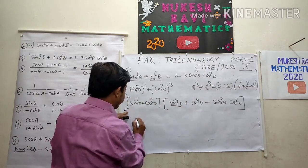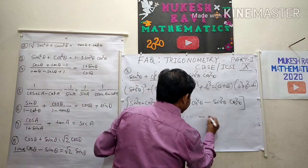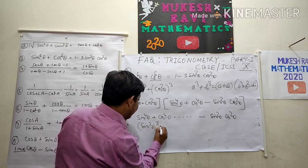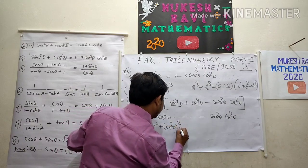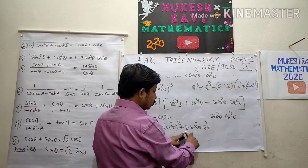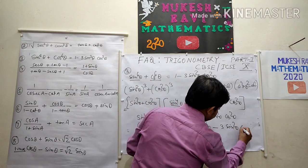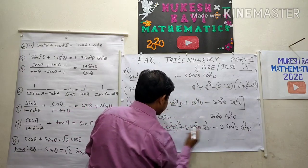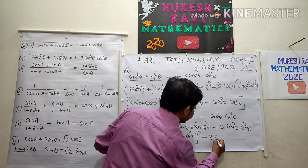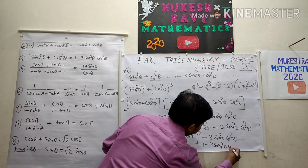So using a³ + b³, let a = sin²θ and b = cos²θ. This gives (sin²θ + cos²θ)(sin⁴θ + cos⁴θ − sin²θcos²θ). This first factor becomes 1. Now sin⁴θ + cos⁴θ = (sin²θ + cos²θ)² − 2sin²θcos²θ = 1 − 2sin²θcos²θ. So the whole expression becomes 1·(1 − 2sin²θcos²θ − sin²θcos²θ) = 1 − 3sin²θcos²θ.